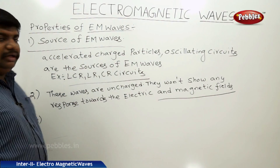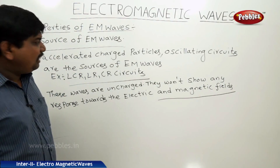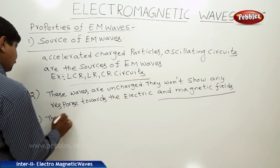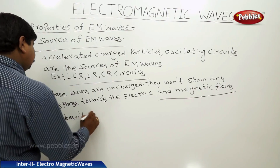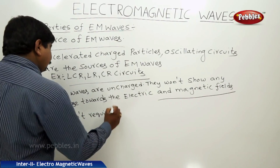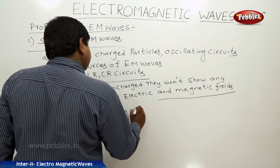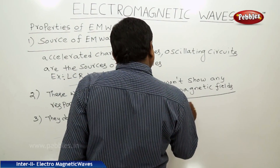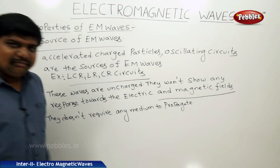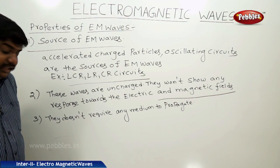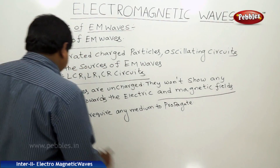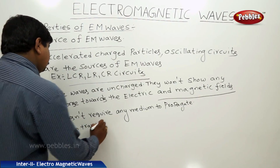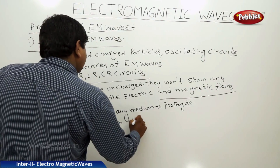The third important property of electromagnetic waves is that they do not require any medium to propagate. No medium is required to propagate electromagnetic waves, which means these waves can travel through vacuum as well.